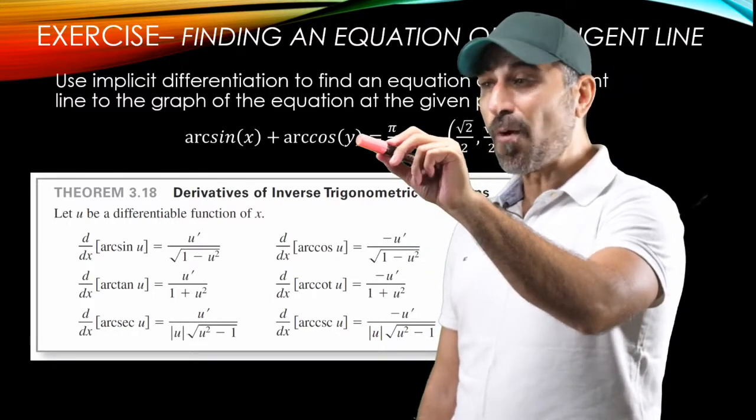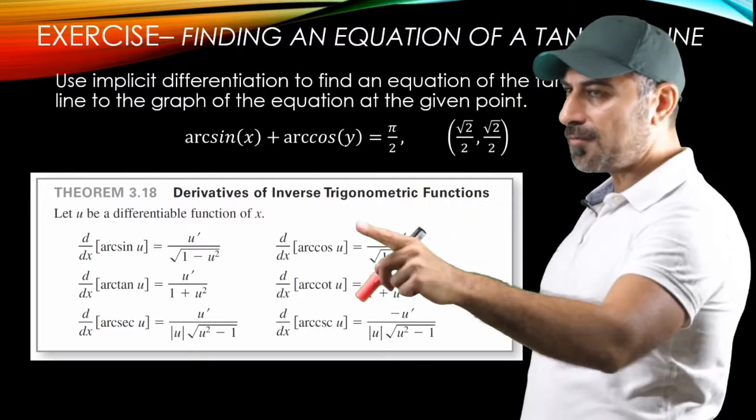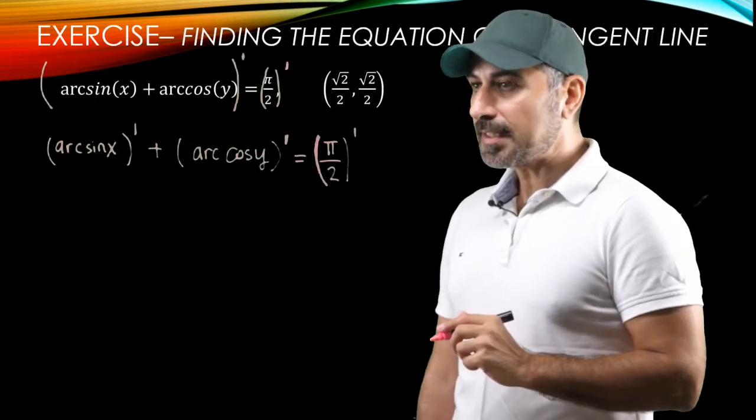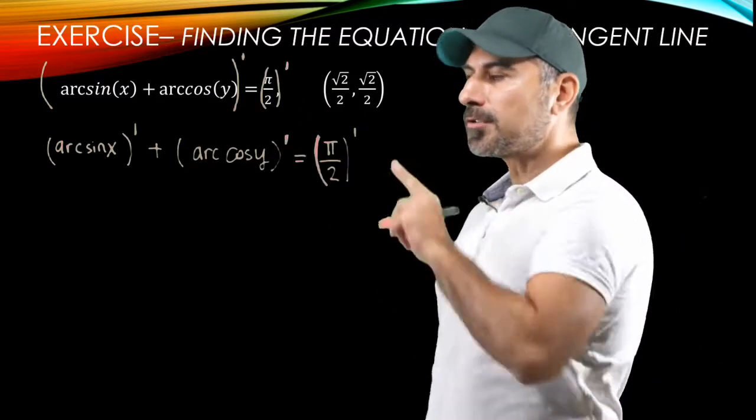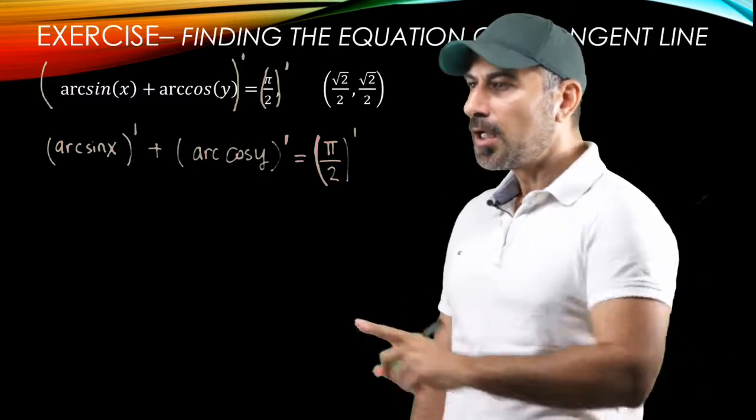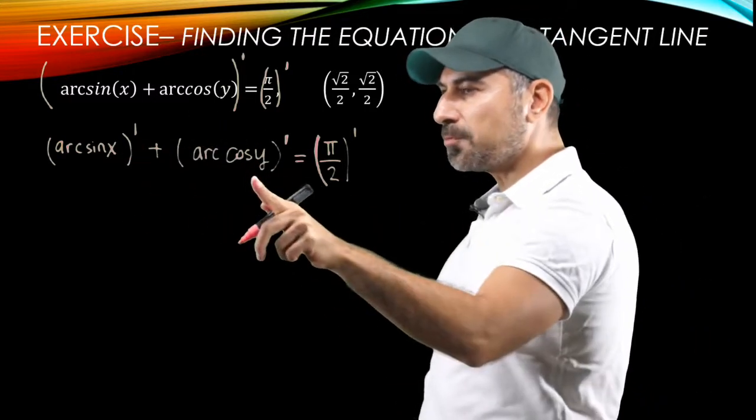And remember, we're looking for y prime evaluated at this x and y. So that's why we have to keep that forward. As a first step of implicit differentiation, we take the derivative of the left-hand side and the derivative of right-hand side of the equation. And the derivative of the left-hand side is the sum of the derivatives of each piece here.